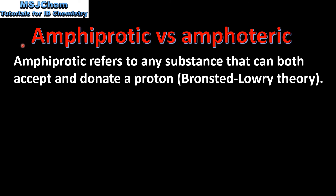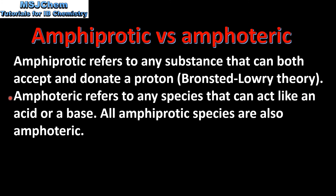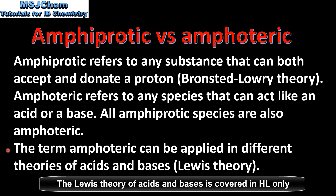Finally I'd like to look at the difference between amphiprotic and amphoteric. Amphiprotic refers to any substance that can accept and donate a proton in the Brønsted-Lowry theory of acids and bases. Amphoteric refers to any species that can act like an acid or a base. All amphiprotic species are also amphoteric. The term amphoteric can be applied in different theories of acids and bases, such as Lewis theory, where there is no proton transfer.